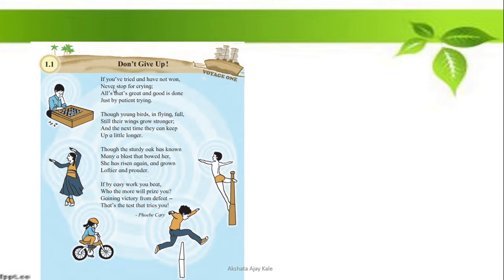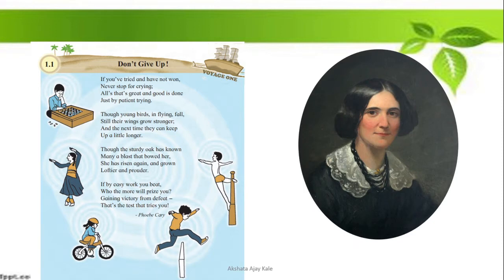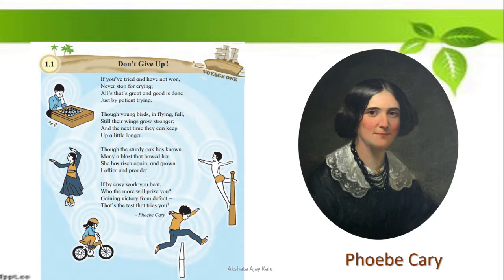We can see four stanzas in this poem — the first, second, third, and fourth. The name of the poet is Phoebe Carey. Phoebe Carey is an American writer and poet who has written so many poems. Today we will go through this poem, Don't Give Up.